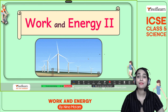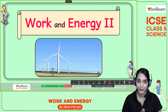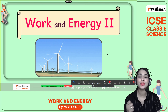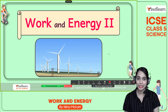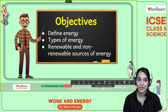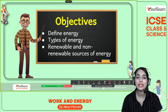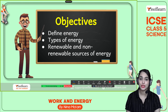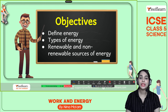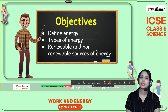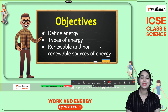This session is for Class 5 and today's chapter is Work and Energy, Part 2. Are you ready? Get ready with a notebook and pen and let's follow along. These are the objectives we are going to cover today: first, define energy; second, types of energy; and third, renewable and non-renewable sources of energy.